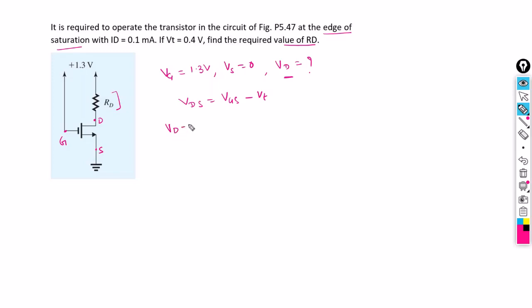Vds we can write in terms of drain voltage and source voltage, written as Vd minus Vs. Vgs we already know is given as 1.3 volts, and Vt is 0.4 volts. Source voltage is zero, so Vd is 0.9 volts.